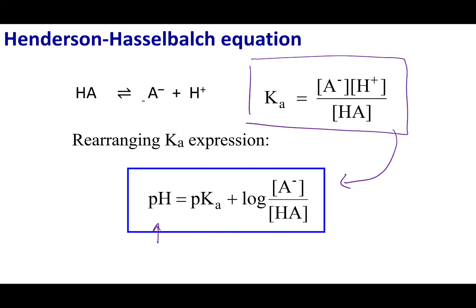The idea is that we can calculate the pH of a solution by taking the pKa. The pKa is just the negative log of the Ka. Right on your Ka tables, next to the Ka column is the pKa column, so you can look up these values. To the pKa, you add the log of the conjugate base divided by the concentration of our acid — these are the initial concentrations of A⁻ over HA.